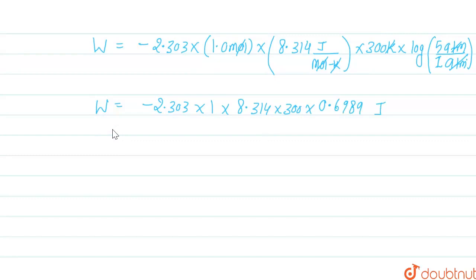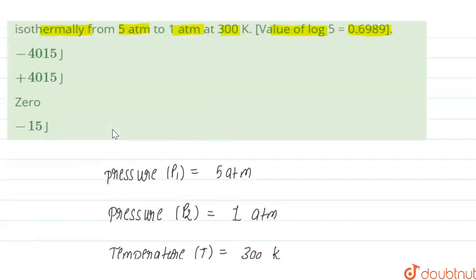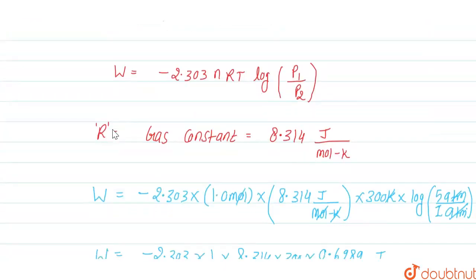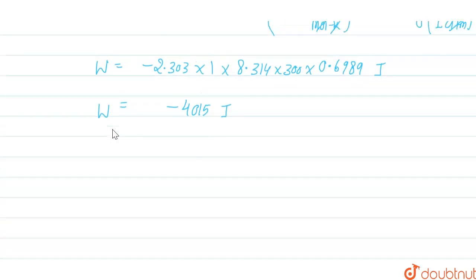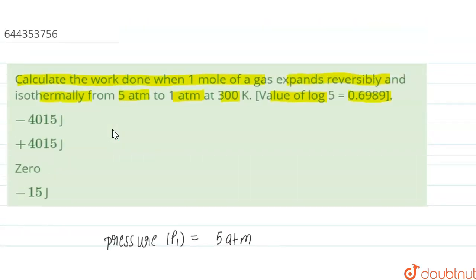Calculating from this, we get the work done is -4157 joules, approximately -4157 joules. So for the isothermal reversible expansion of a gas, the work done is -4157 joules, and the correct option is option number one.